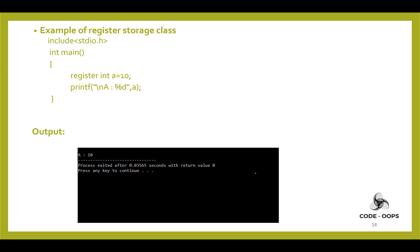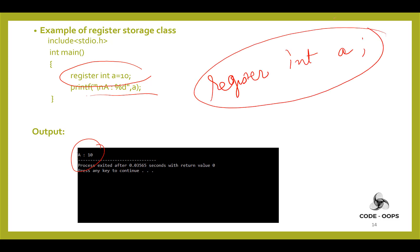Let's see an example of register variables. Inside the main function, a register variable is declared. The initial default value of a register local variable is 0.